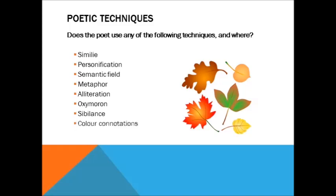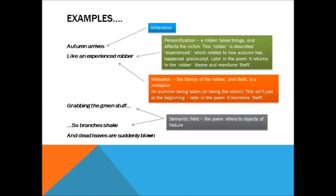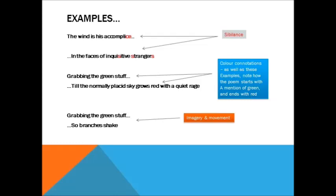Colour connotations. Black humour, green with envy, seeing red. Pause the video and look at the examples of how poetic techniques are used in the poem, Autumn. The lines of the poem are on the left with poetic techniques on the right. There are two slides of examples.